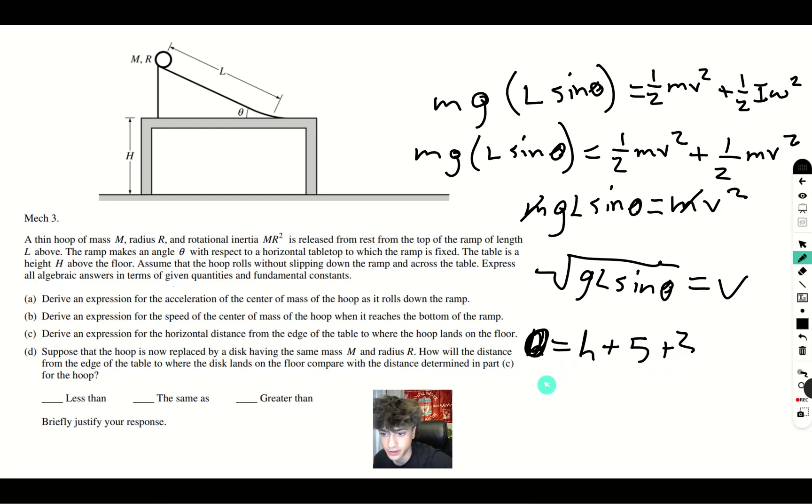So, here you get H over 5. Square root of H over 5 is equal to the time it will take for the ball to reach the bottom.